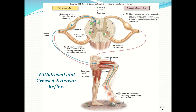Here's another example of the withdrawal and cross-extensor reflex. In this case, a person has stepped on a rock. The painful stimulus causes the withdrawal reflex. The sensory nerve signal is detected by interneurons; one neuron connected to the hamstrings stimulates motor neurons to the flexors, resulting in withdrawal of the limb from the painful stimulus. Other interneurons cross to the opposite side and stimulate motor neurons to the extensors of the opposite leg's quadriceps, resulting in extensor contraction and support of body weight.